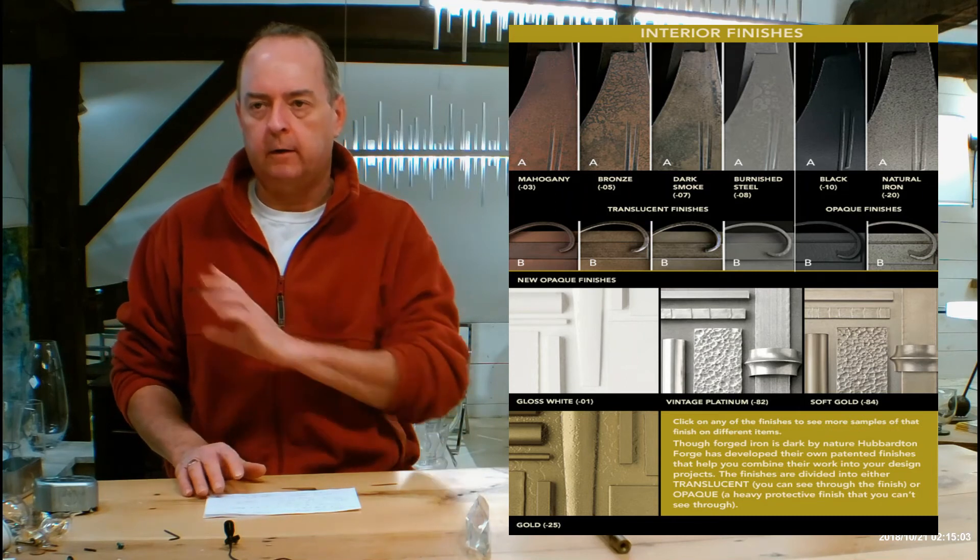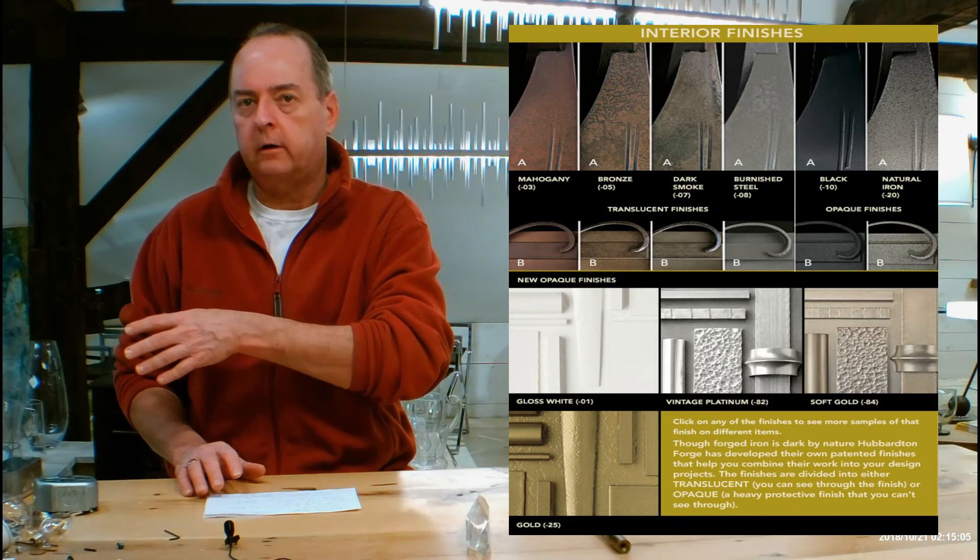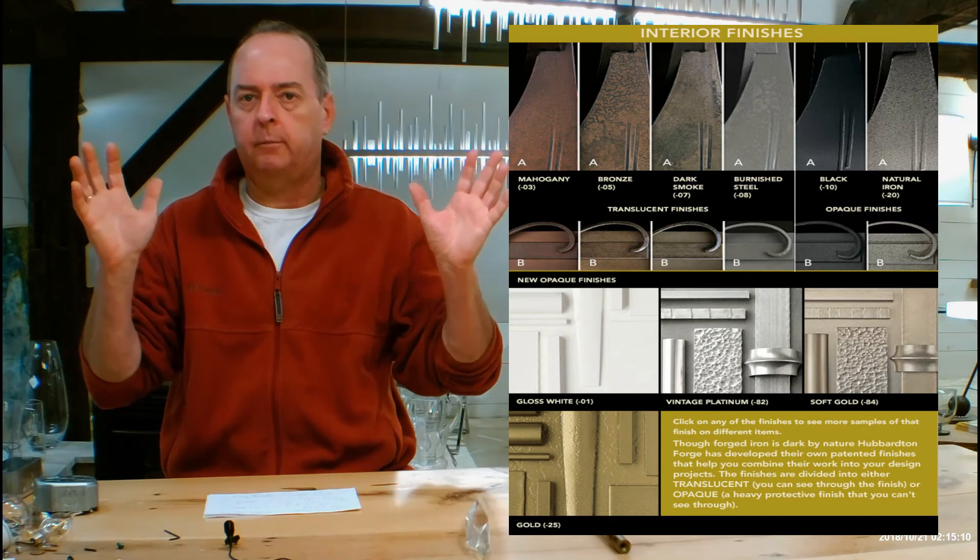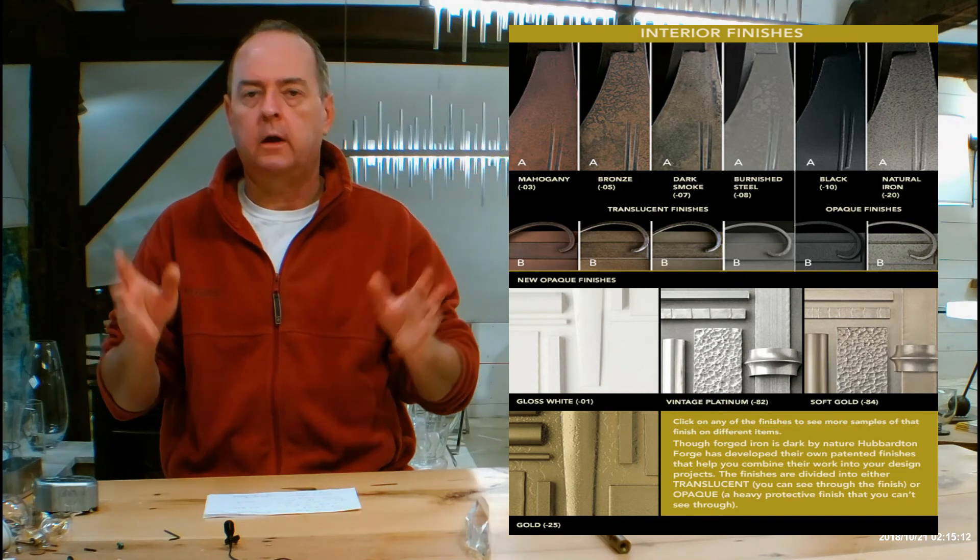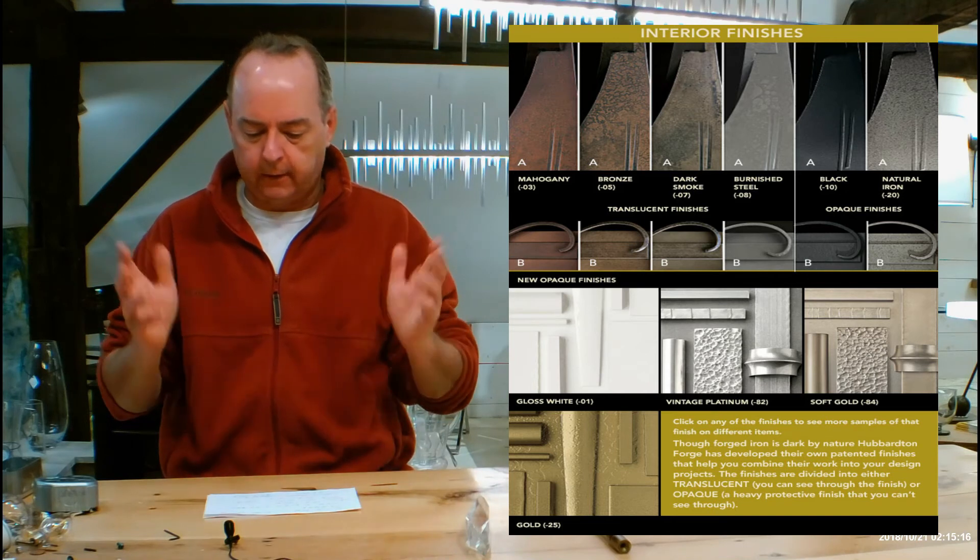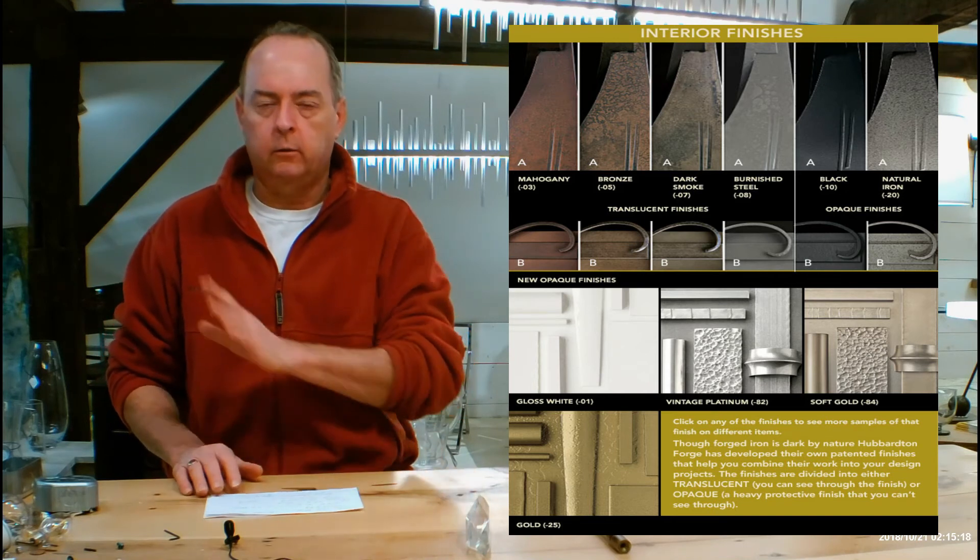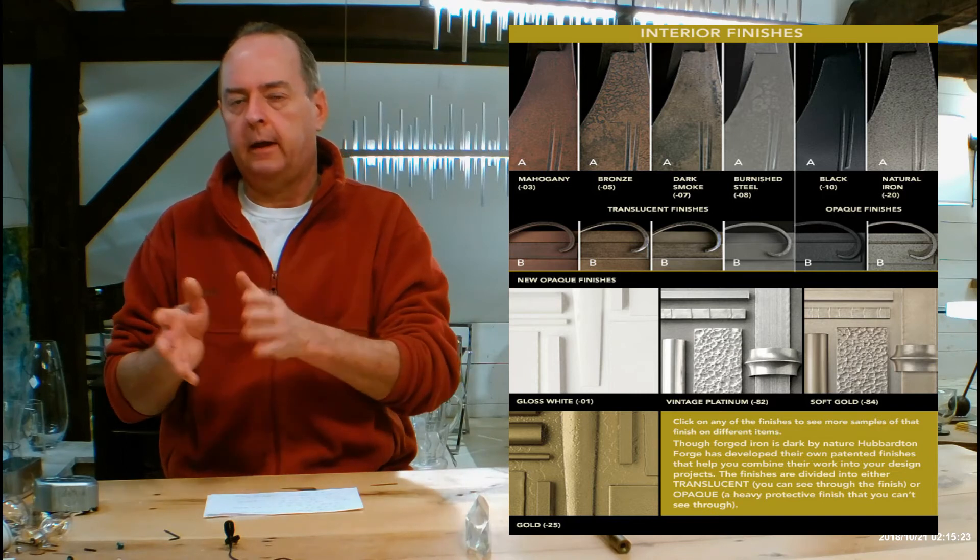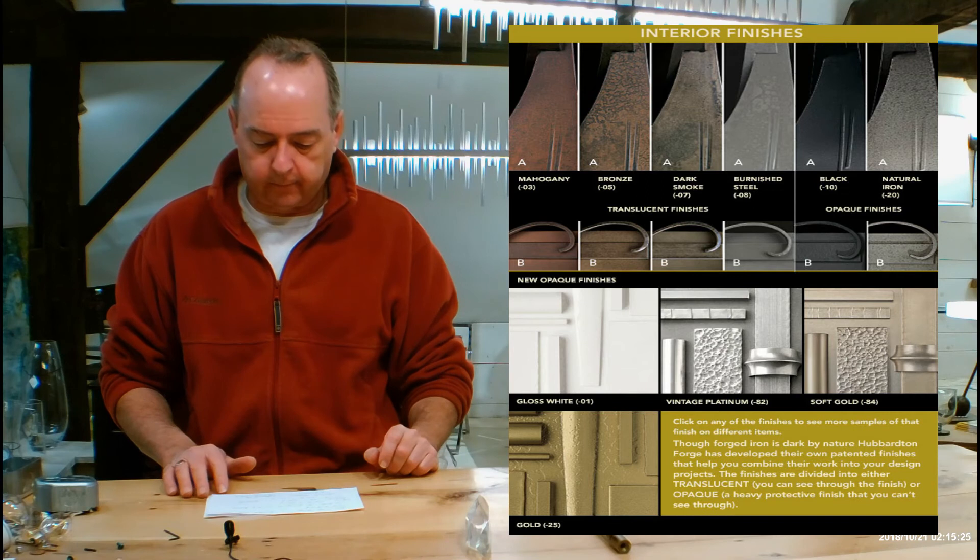So it's really important that you watch the video, use the chart. You can click on that chart on different things so you can click on dark smoke and a big page will pop up and show you lots of different things in dark smoke. Click on burnished steel or natural iron. It'll do the same thing. But it's really important that you understand how Hubbardton Forge's finishes are kind of divided into translucent and opaque and how they can look on different fixtures.